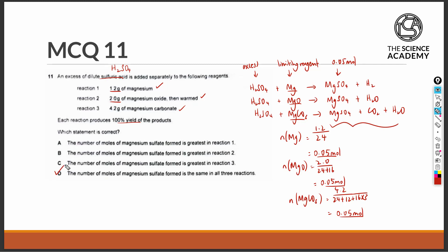Therefore, option D is the correct answer, where the number of moles of MgSO4 formed is the same in all of the reactions.